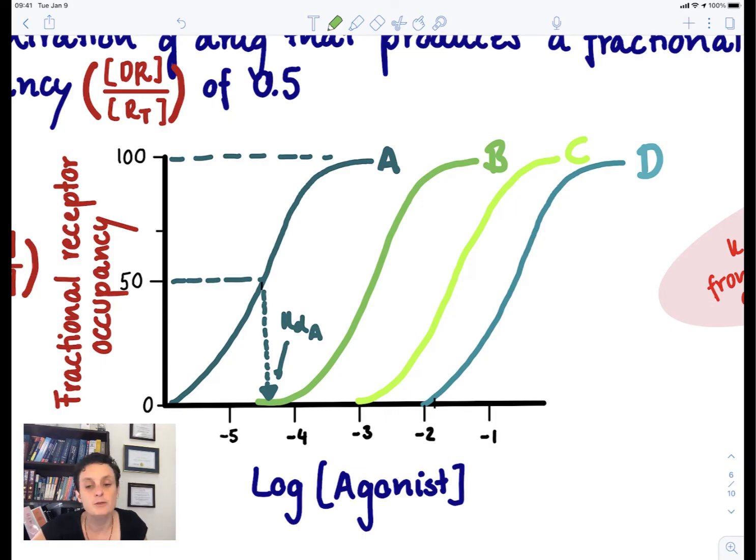Let's do drug B. So for drug B, now 50% and we go down. So that would be the KD for drug B. KD is something that tells you about how well the drug binds.